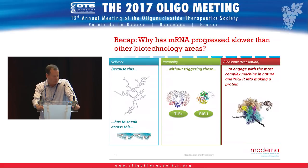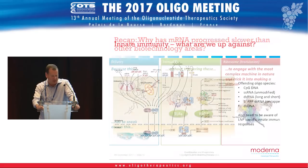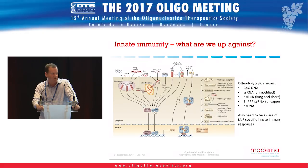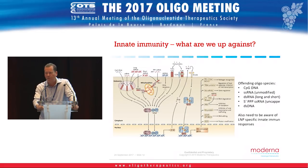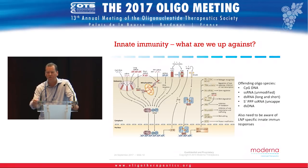Going back to innate immunity: there are two different classes of sensors — endosomally restricted and cytosolic. The cytosolic sensors have to discriminate between self-RNA and non-self or foreign RNA. We have the ability to control that through the purity and makeup of our messenger RNA delivered exogenously. If we deliver 100% pure messenger RNA with the appropriate cap structure and poly-A tail, it really should not stimulate those innate immune sensors.